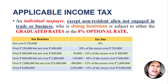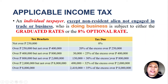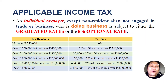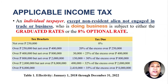The graduated rates are so called because the tax rate applicable is gradual — it's graduated. If taxable income is not over ₱250,000, the tax due is zero. If taxable income is over ₱250,000 but not over ₱400,000, the tax due is 20% of the excess over ₱250,000, and so on. This graduated rate is applicable from January 1, 2018 through December 31, 2022, after which new graduated rates take effect from January 1, 2023 onwards.